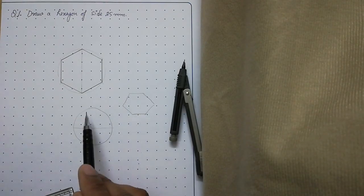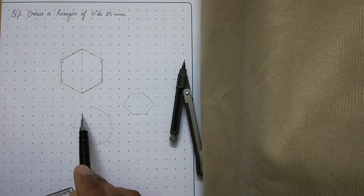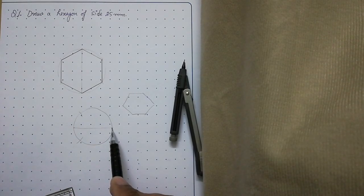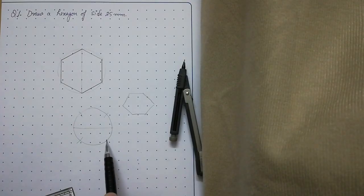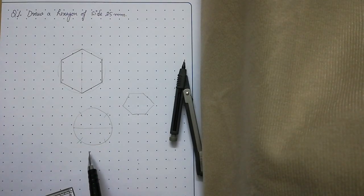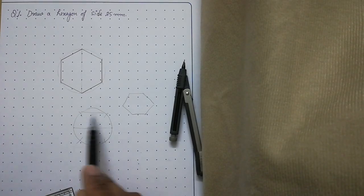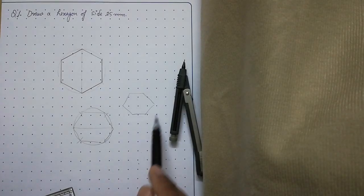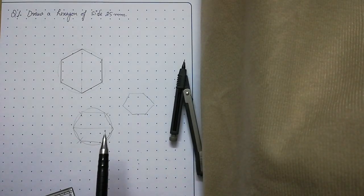Open your compass again to 25 millimeters, put the compass at this point and cut the circle on both sides. Put the compass at this point and cut the circle on both sides of the horizontal diameter by 25 millimeters. Then join these points with the help of a scale using thick lines. You will get this particular position of the hexagon.